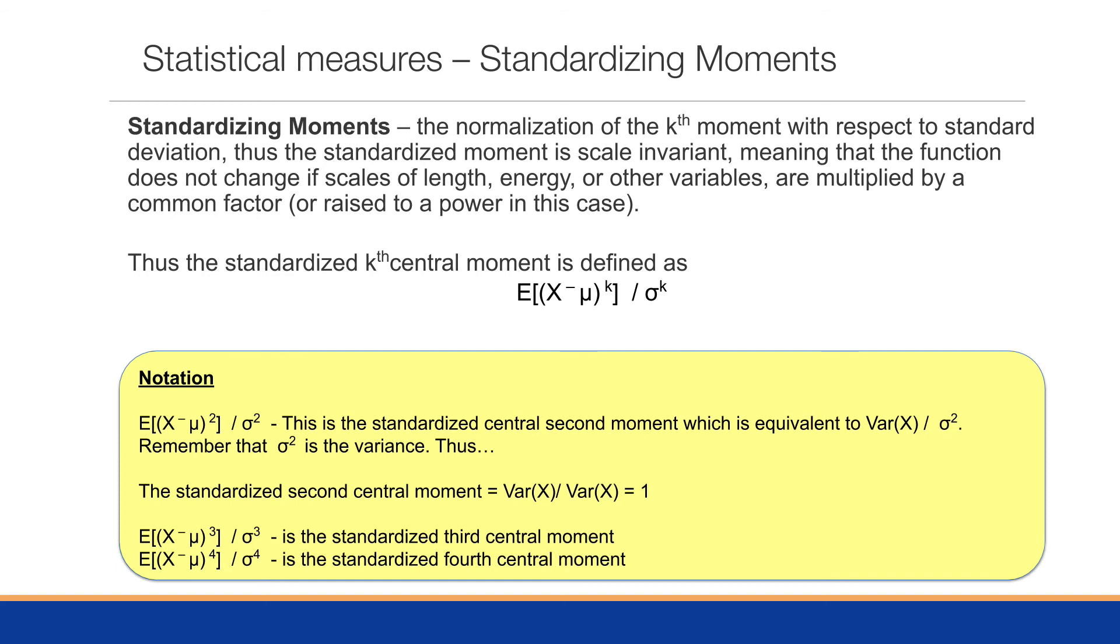Thus, the kth central moment is defined as the expected value of X minus mu to the kth power divided by the standard deviation to the kth power. If we look at the first formula here, we have the expected value of X minus mu squared divided by sigma squared. This is the standardized second central moment, which is equivalent to the variance divided by the variance.